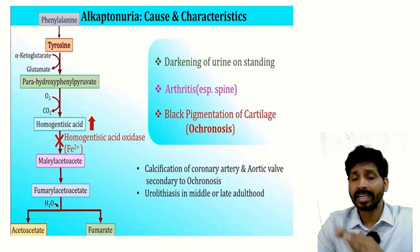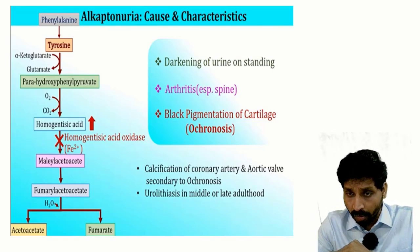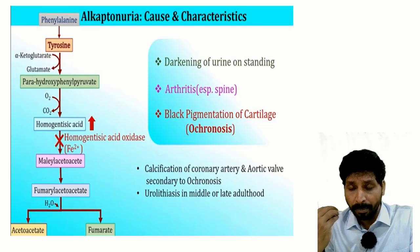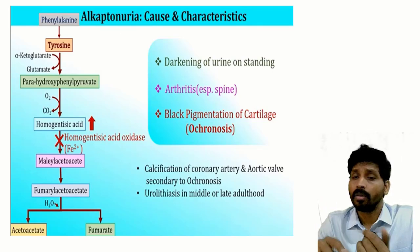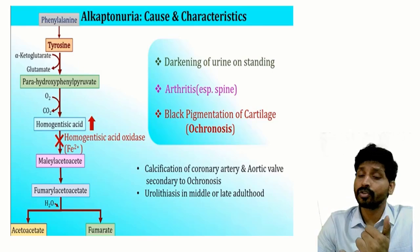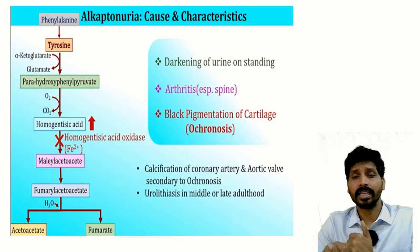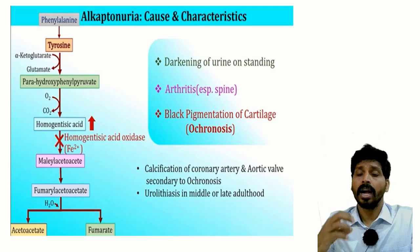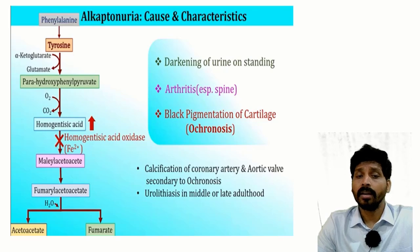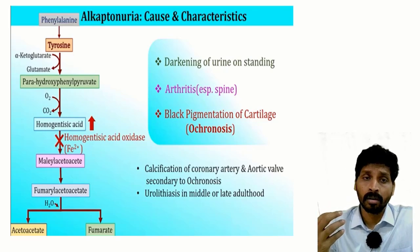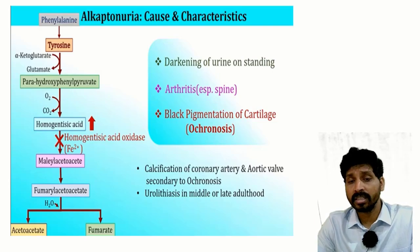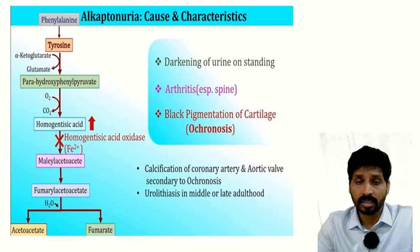In the absence of homogentisic acid oxidase, homogentisic acid is not further processed, so high levels accumulate in the circulation. It starts depositing in soft tissues like ear lobes and pinnas — that is the reason for blackening of soft tissues. The high levels also pass through the kidney into the urine. Homogentisic acid is strongly reducing in nature, so it reacts with oxygen in the air and turns to a blackened color. It also accumulates in bones, causing arthritis in the spine and hip joint, and black pigmentation of cartilages — known as ochronosis. Calcification of coronary arteries, aortic wall, and urolithiasis can occur in middle or late adulthood.